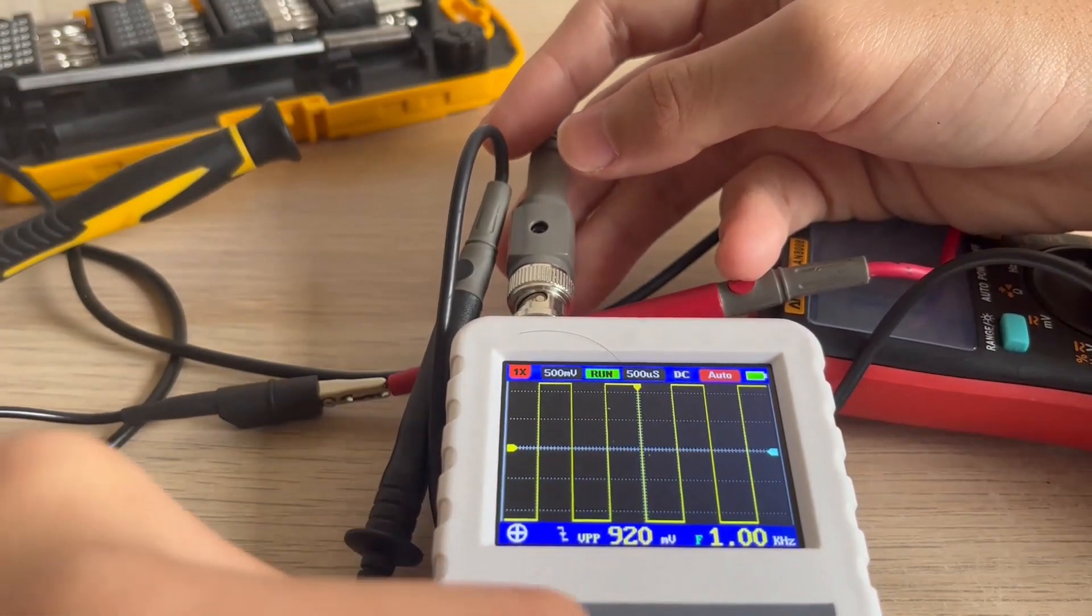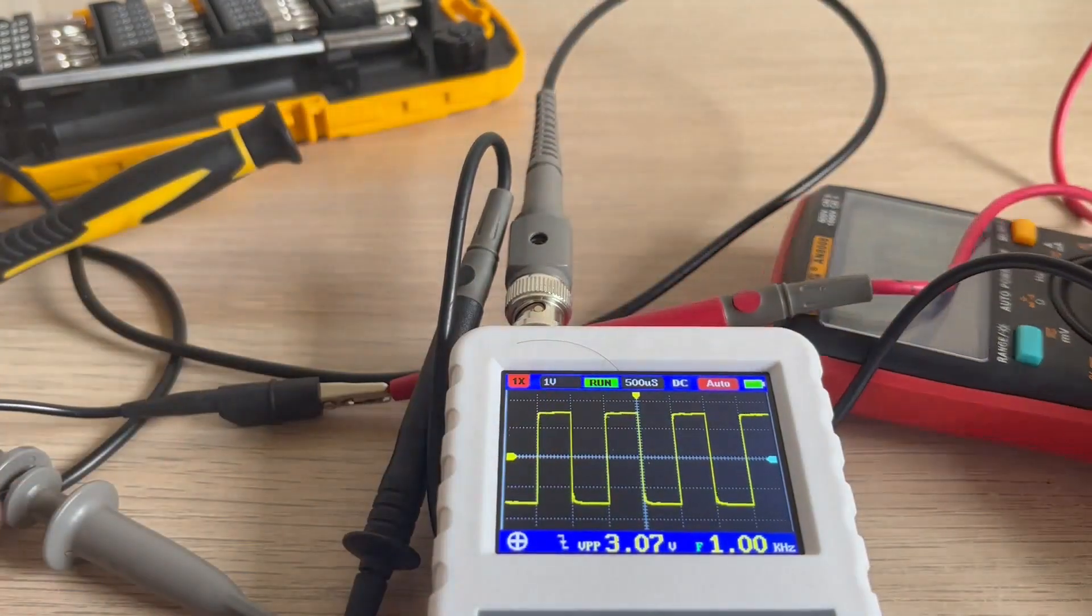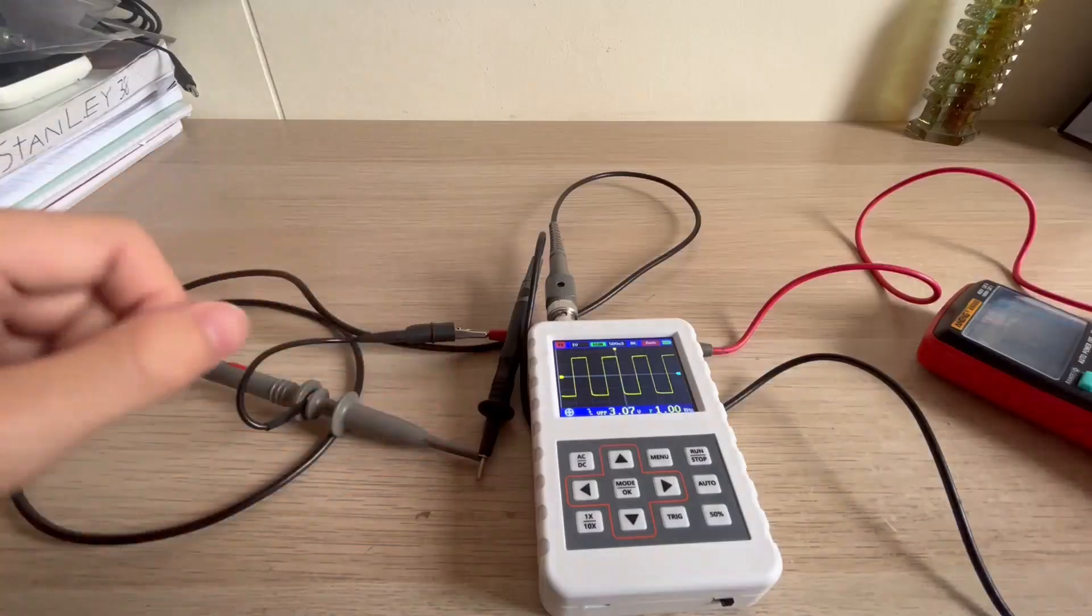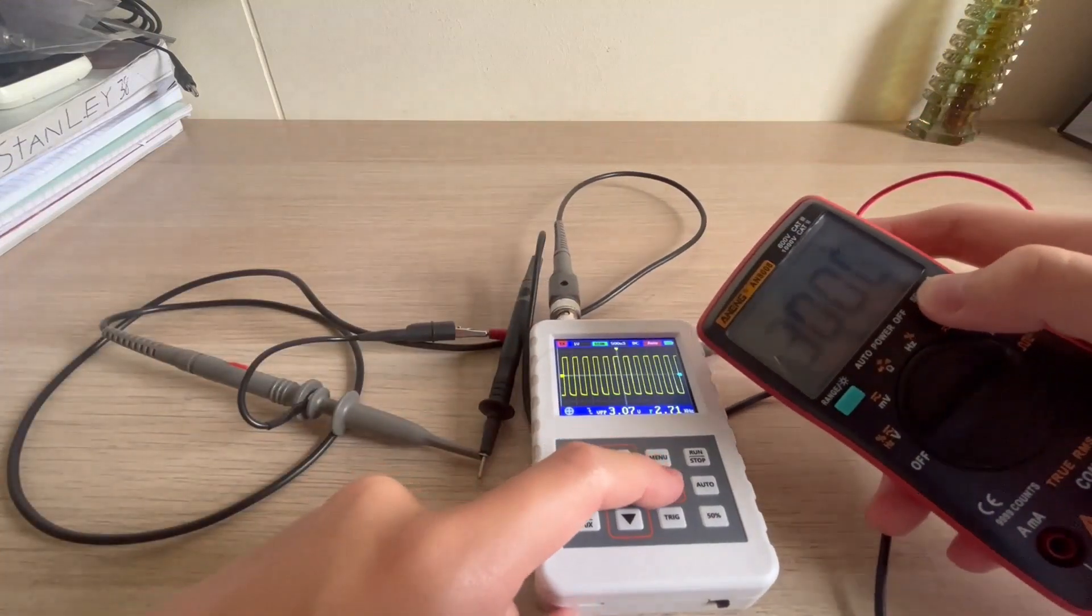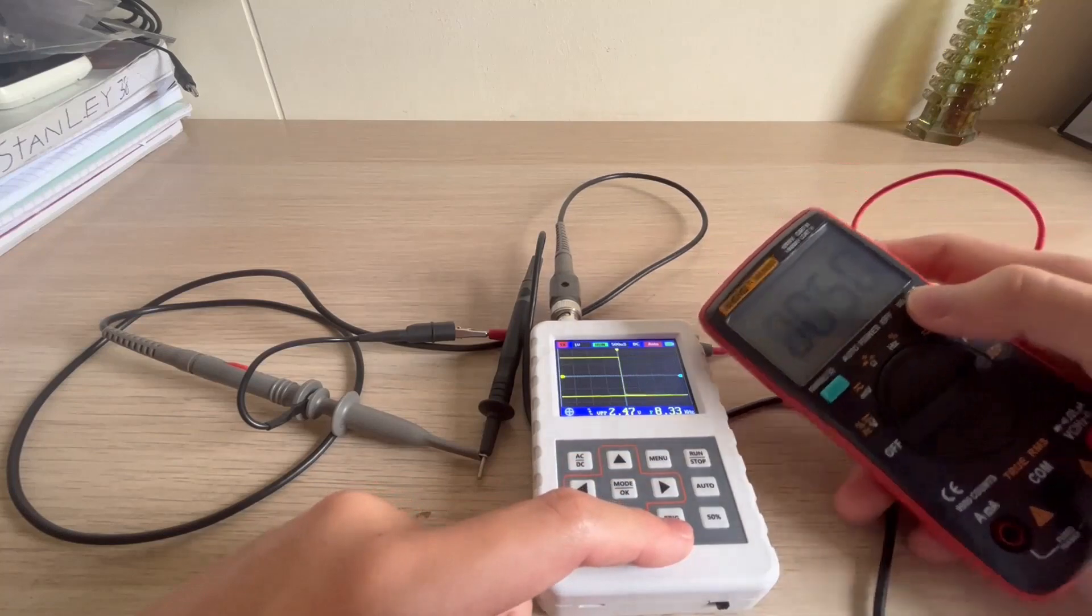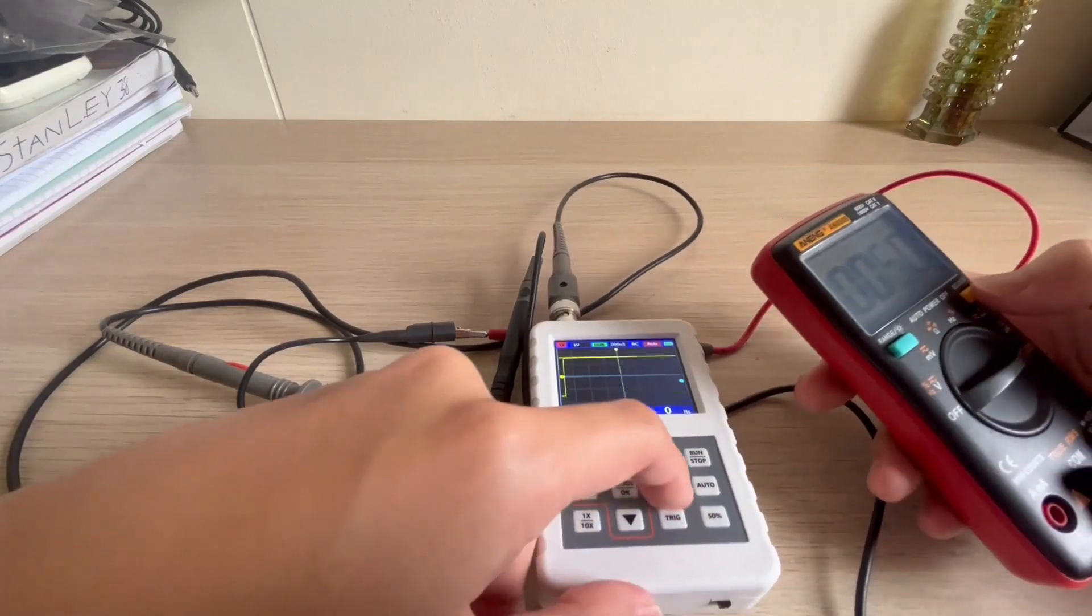Alright so with the oscilloscope probes calibrated, it's now time for some real testing. Just do some fun tests. 2000 Hz, 3000, 4000, 5000, 6000. That's not 6000, it just goes back to 50.